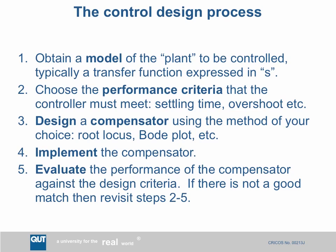Let's review the control design process, which you should be familiar with from previous units. There are really five important steps. First, obtain a model of the plant expressed as a transfer function — a Laplace transform in terms of the variable s. Second, decide on performance criteria: how quickly will it settle, what's the overshoot, and so on. Third, design a compensator — there are many methods including root locus diagrams and Bode plots.